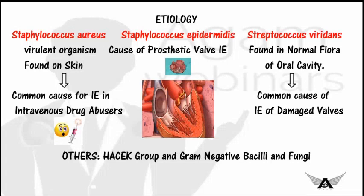The causative organisms of infective endocarditis include Staphylococcus aureus, Streptococcus viridans, and Staphylococcus epidermidis. There is also a group of bacteria known as HACEK — Haemophilus, Actinobacillus, Cardiobacterium, Eikenella, and Kingella — and other bacteria such as Enterococcus also cause infective endocarditis.